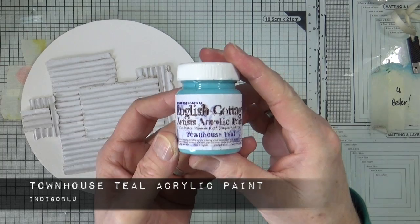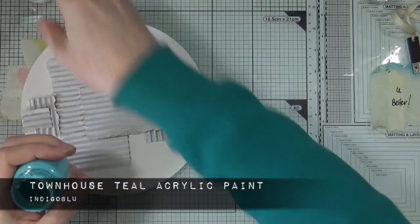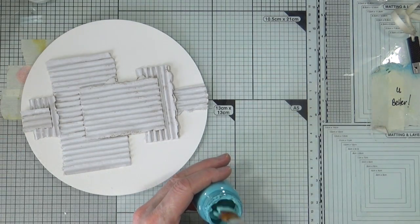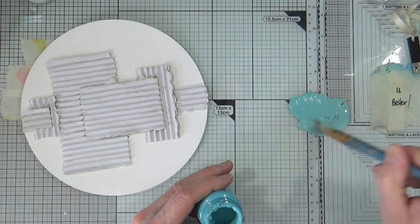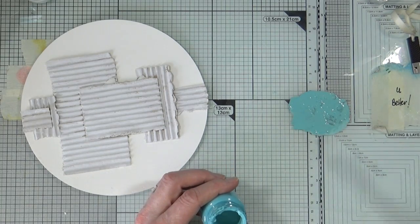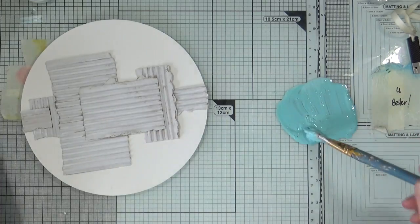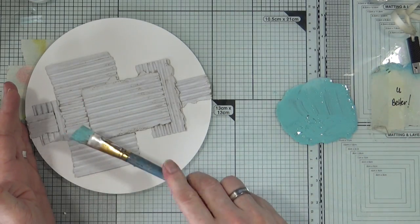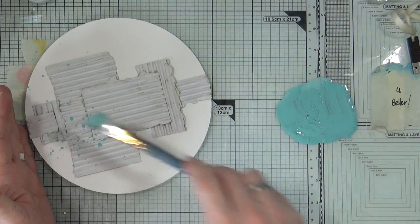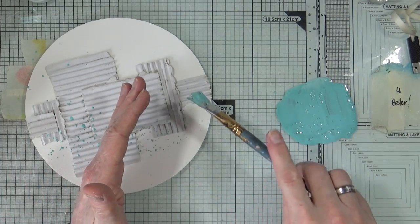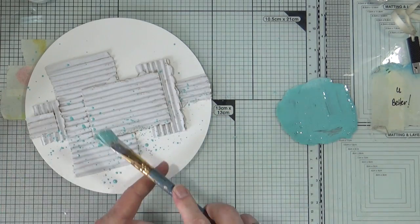Next up I'm going to take the Townhouse Teal acrylic paint from Indigo Blu, add some to my craft mat, then mix it with water to create a nice high-flow loose mixture. Then I'm going to add some heavy splatters all across the bottom section, concentrating on the bottom section of my art journal page.